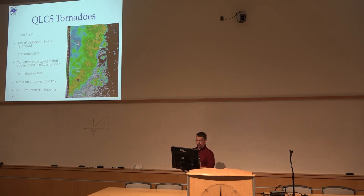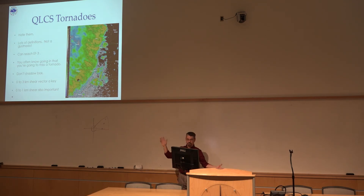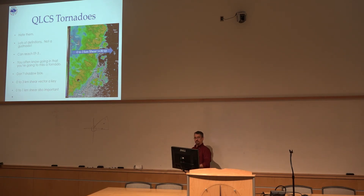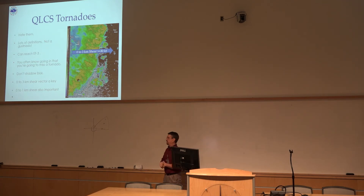I tell our office: don't shadow box with them, don't guess at them, don't light up the whole line, but if you think you've got one and you understand what's going on, certainly put out a tornado warning for it. The zero to three kilometer shear is very important in understanding that — you can anticipate this some.